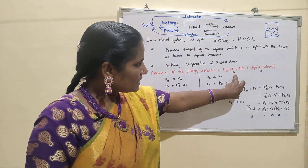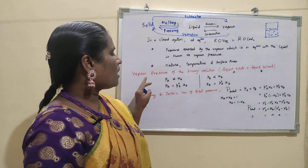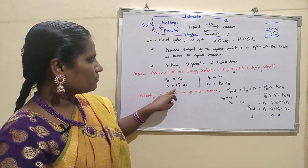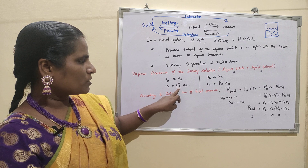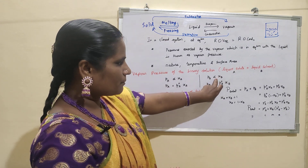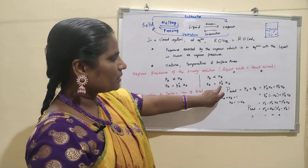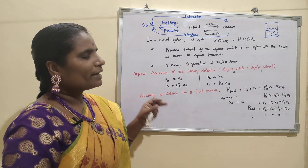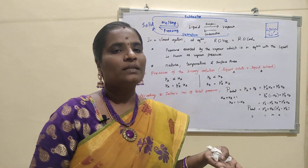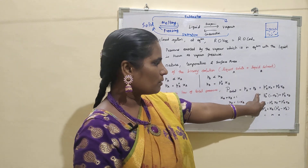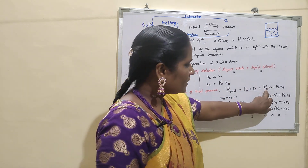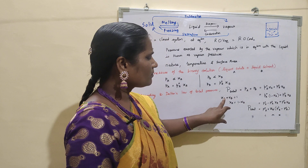We take the solute as component A and the solvent as component B. According to Raoult's law, the partial pressure P_A is directly proportional to the mole fraction X_A, with the proportionality constant being the pure component vapor pressure P°_A, so P_A = P°_A × X_A. Similarly for component B: P_B = P°_B × X_B. Applying Dalton's law of total pressure, the total pressure equals the sum of all partial pressures: P_total = P_A + P_B = P°_A × X_A + P°_B × X_B.